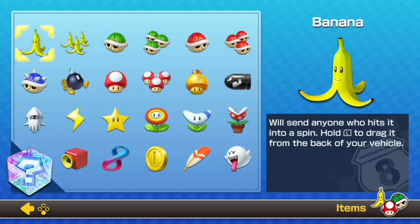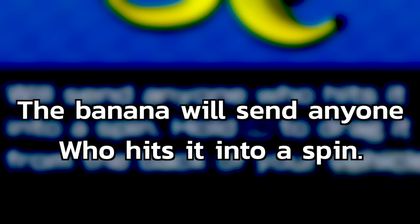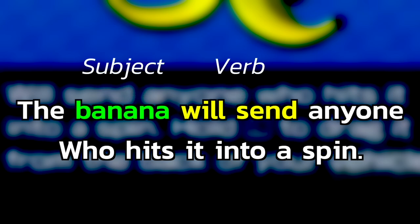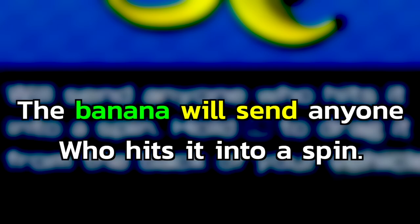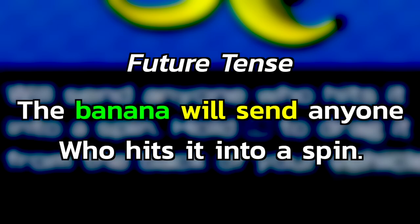This sentence does not have a subject. Of course it is implied that the banana is the subject, so the sentence should read: 'The banana will send anyone who hits it into a spin.' 'Banana' is the subject and 'will send' is the verb. 'Will send' brings us to the concept of verb tense — this sentence is in future tense, meaning the action will take place at a future point in time.